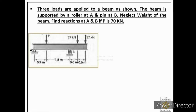We are given one beam supported at two points. At point A we have a roller support and at point B we have a pin support or hinged support. The value of P is given as 70 kN and we are asked to find the reactions at support A and at support B. We will not consider the weight of the beam during calculations.